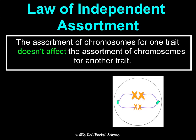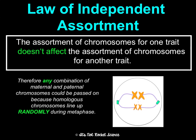The law of independent assortment says that the assortment of chromosomes from one trait doesn't affect the assortment of chromosomes from another trait. During metaphase, they line up randomly — it's not like all the dominant alleles get on one side and all the recessive alleles get on another. Any combination of maternal and paternal chromosomes can be passed on, because homologous chromosomes line up randomly during metaphase. This is why you can have the same parents as one of your siblings, but still look and be so different from them.